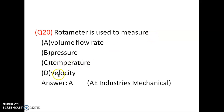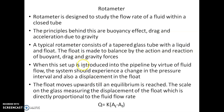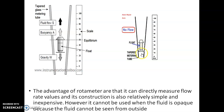Rotameter is used to measure the flow — volume flow rate in cubic meters per second, which is the discharge. Rotameter is a device whose principle is based on buoyancy effect, drag, and acceleration due to gravity. It consists of a float that moves upwards and downwards depending upon the flow rate. The three forces acting on the float are: buoyancy force (upward), self-weight due to gravity (downward), and flow force. So rotameter is used to measure the flow.